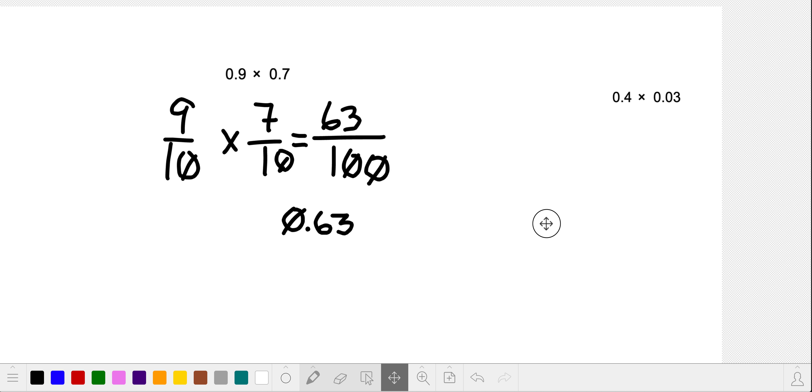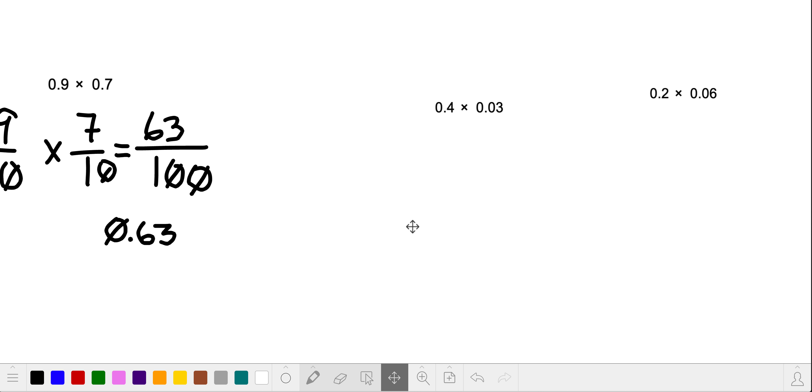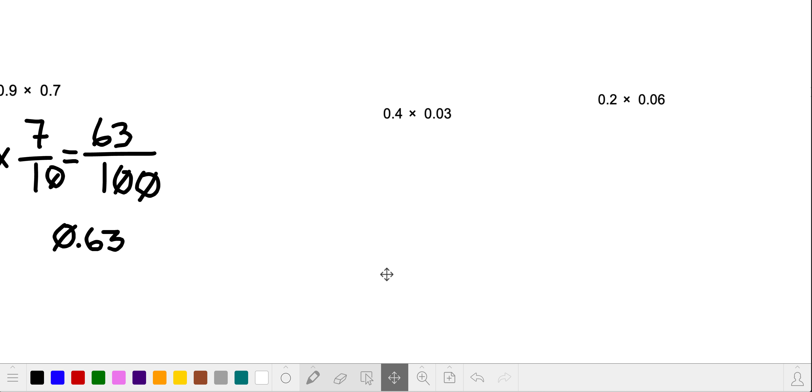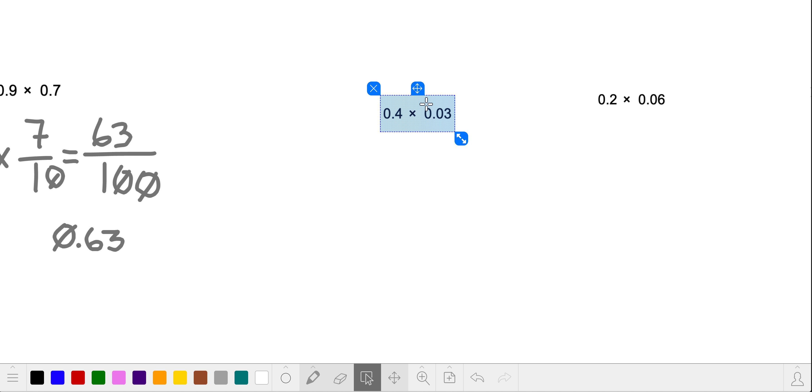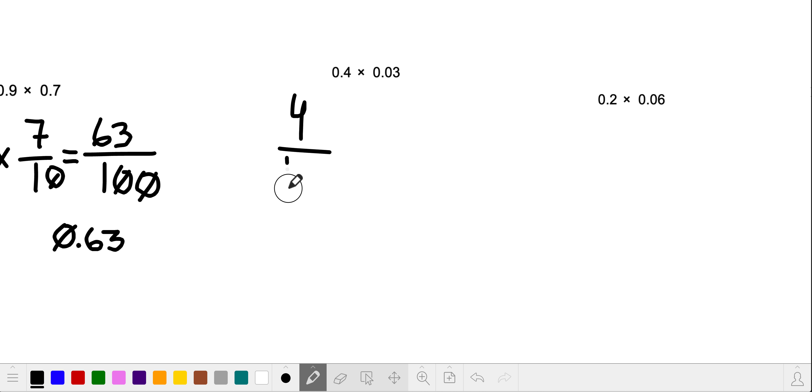If you want to try this next one on your own, you can pause the video right here and go ahead and try it, and then start the video up once you have an answer, or if you decide to give up. So here we have 4 tenths times, and now notice this is not 3 tenths. This is 3 hundredths. So I'm going to write 4 tenths, and we're going to be multiplying it by 3 hundredths.